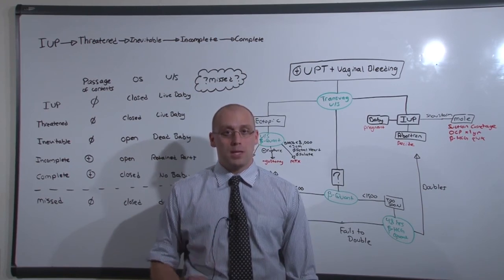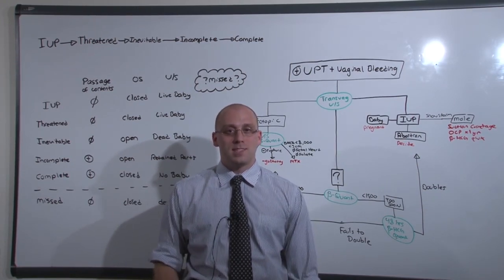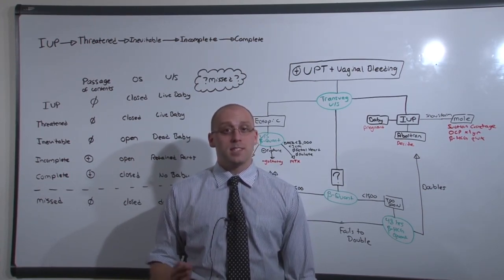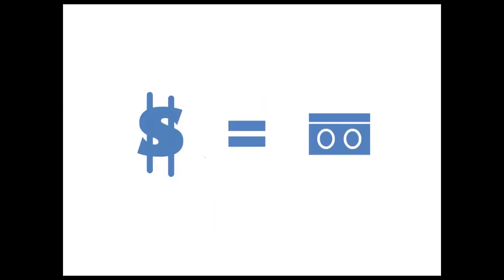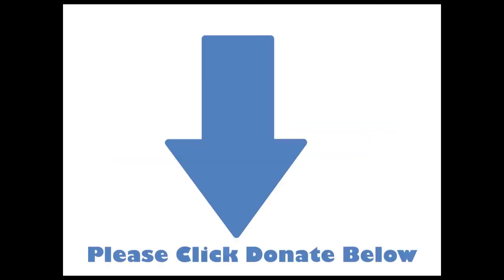The answer is, repeat the beta quant in 48 hours and see if it doubles or not. This is the second segment of vaginal pregnancy. We make these videos for free, and we need your help. Please donate, because without your donations, we can't make any more videos.